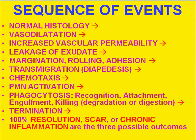Then the neutrophils diapedese or transmigrate through the wall. Then they undergo chemotaxis — they are attracted to areas outside of the blood vessel wall. They are then activated to release all of the substances in their granules and lysosomes, and to phagocytize. In phagocytosis, they recognize the things they're supposed to chew up, attach to them, engulf them, kill them, digest them — and that's the whole chapter.